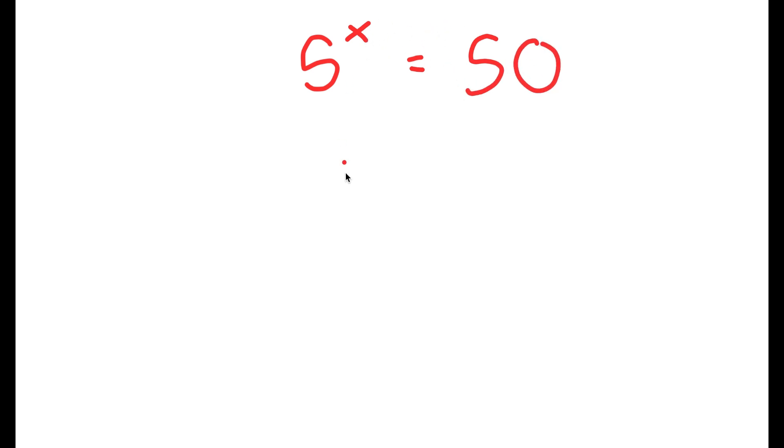To first start with this problem, let's test different values of x. If x is 1, then I get 5 to the power of 1, which is equal to 5, and this is too low.